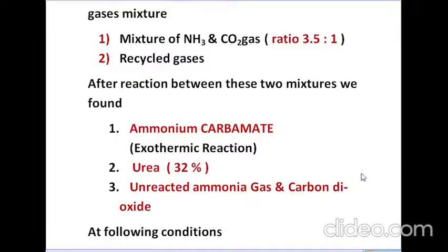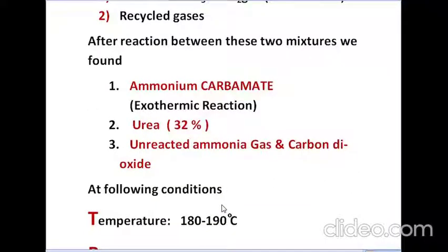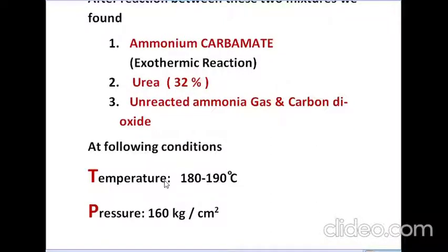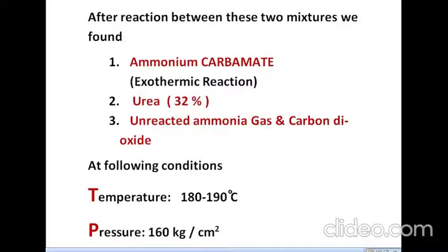After the reaction, the products are: ammonium carbamate from an exothermic reaction, urea at a low concentration of 32 percent, and unreacted ammonia and carbon dioxide gases. Process conditions include temperature between 180 and 190 degrees centigrade and pressure of 160 kg per centimeter square. All three products are sent to the stripping section.